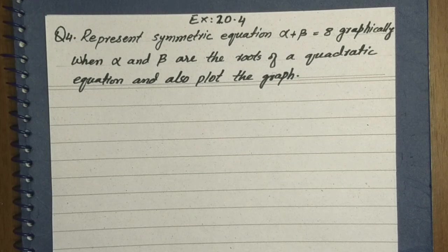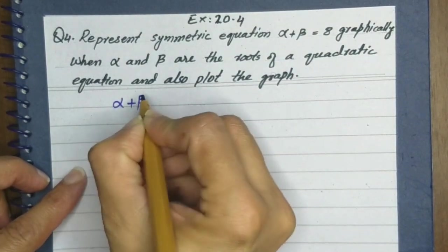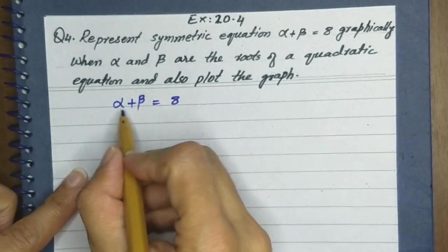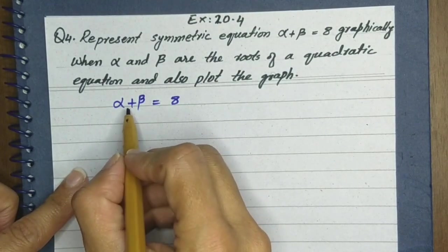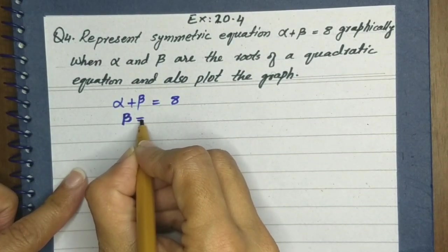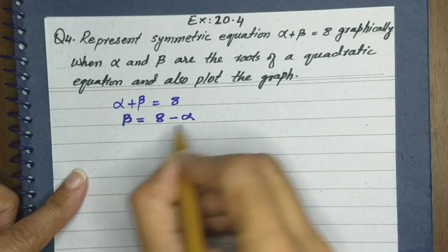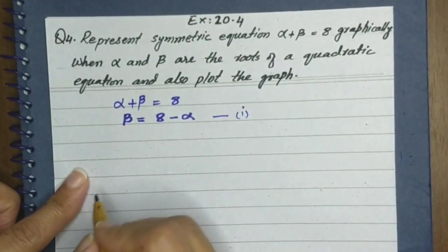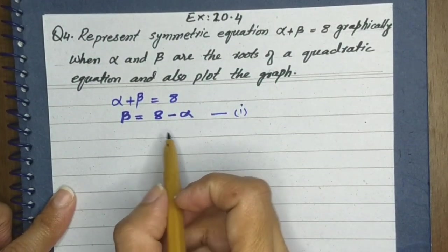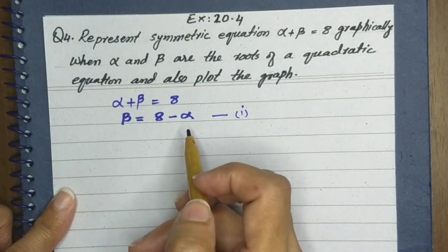Here we have 2 variables whose values we don't know. So we take one of them and find its value. For example, beta is equal to 8 minus alpha. This becomes Equation 1. Since we don't know the values of two variables, we will assign a value to one of them and then find beta with its help.